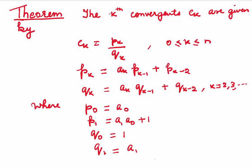What about k = 0 and 1? When we take k = 0, P0 will be a0. When we take k = 1, P1 = a1·a0 + 1. And Q0 = 1, Q1 = a1. These are the formulas which we use for finding our convergents.